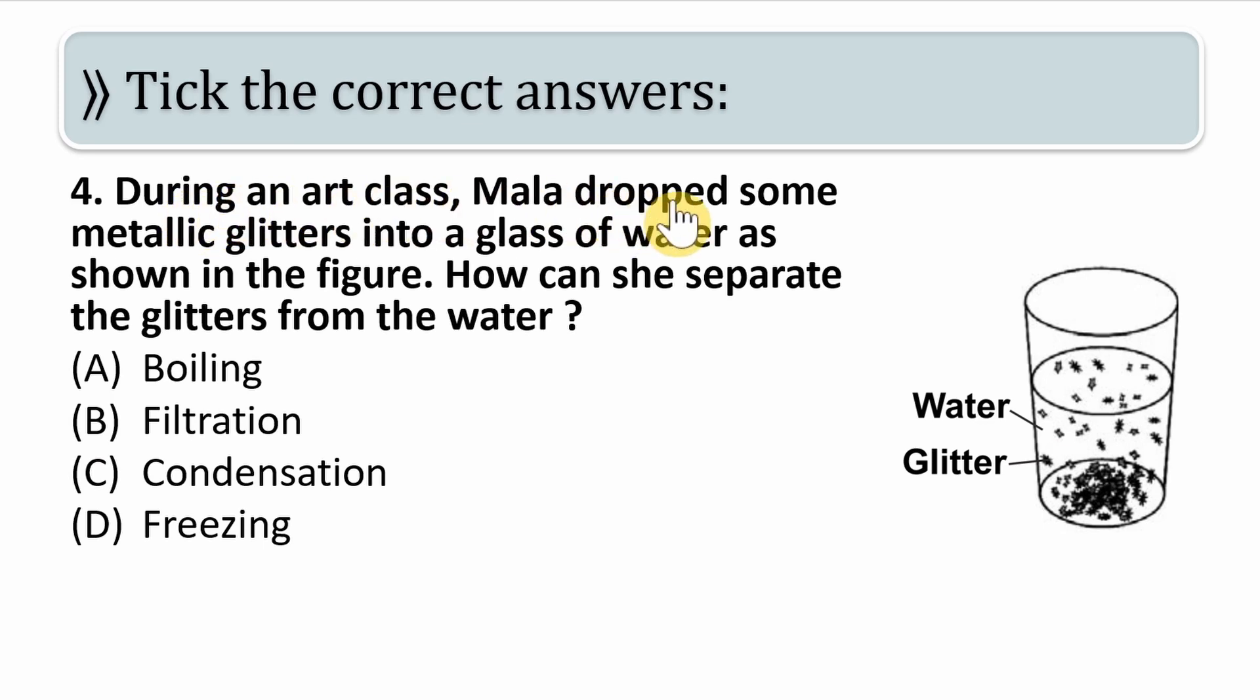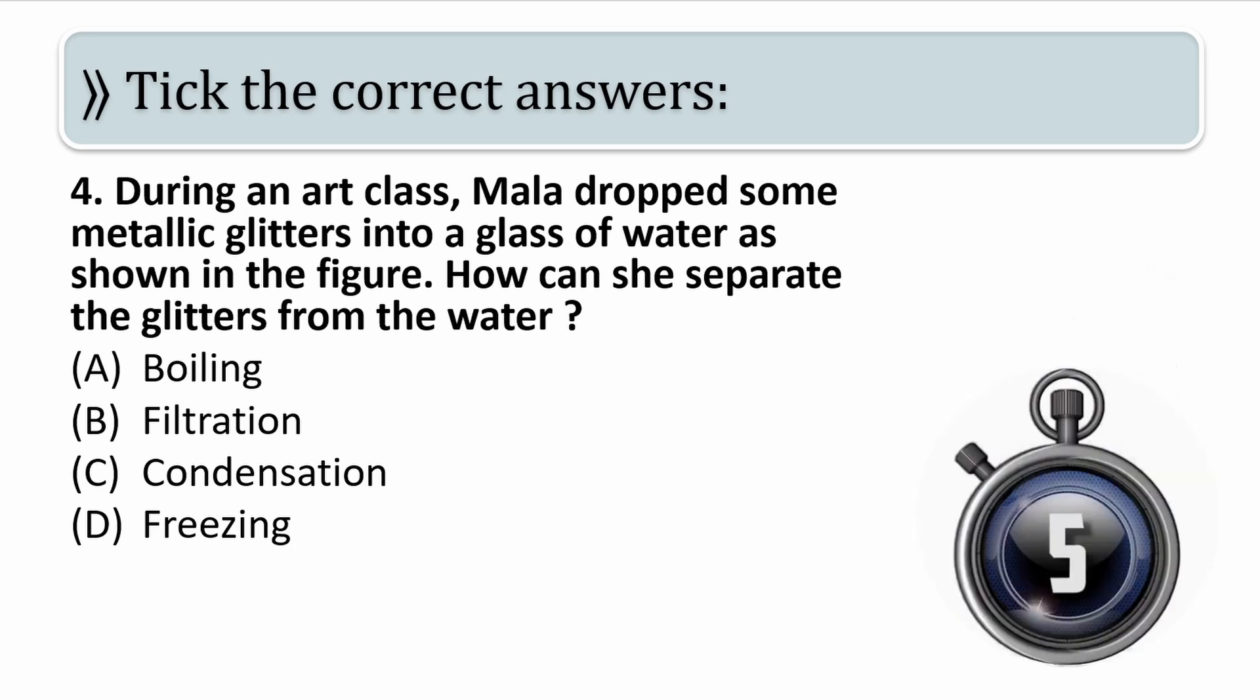During an art class, Mala dropped some metallic glitters into a glass of water as shown in the figure. How can she separate the glitters from the water? Here there is glitter and here there is water, it has been mixed. Option A is boiling, option B is filtration, option C is condensation, option D is freezing. Your time starts now.